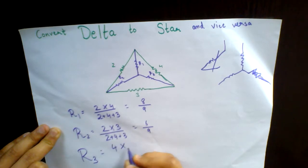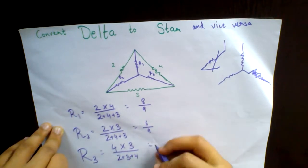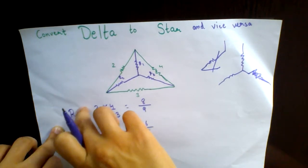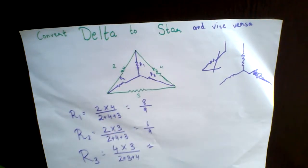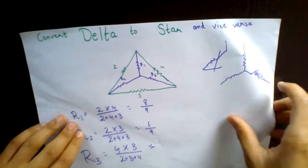It becomes 4 into 3 upon 2 plus 3 plus 4, and whatever the answer you may get, it is the equivalent of delta into star. So now the second part, converting star to delta.